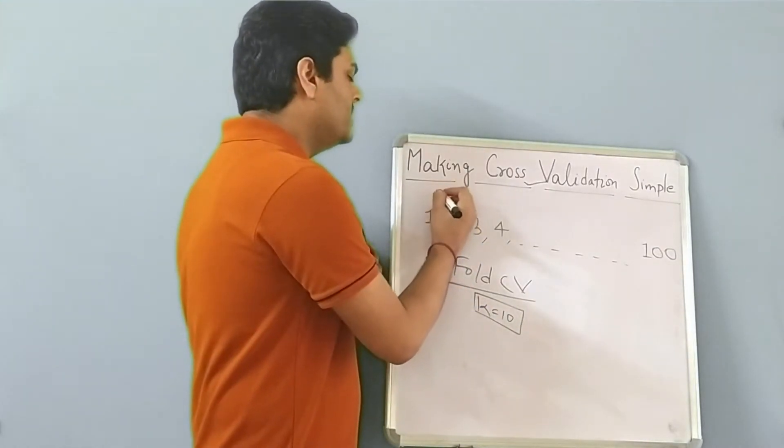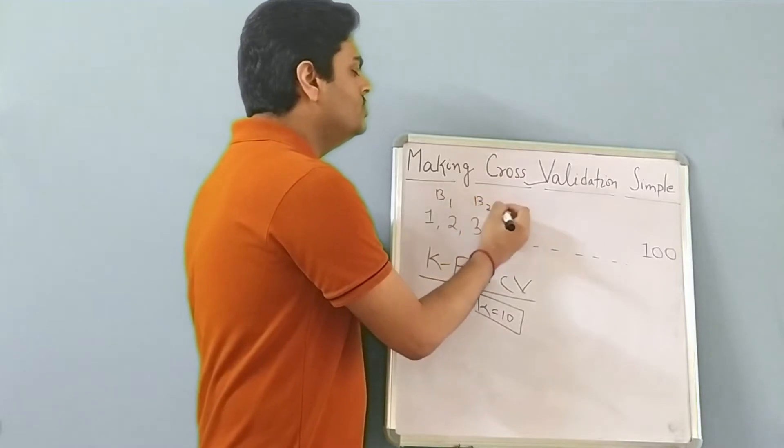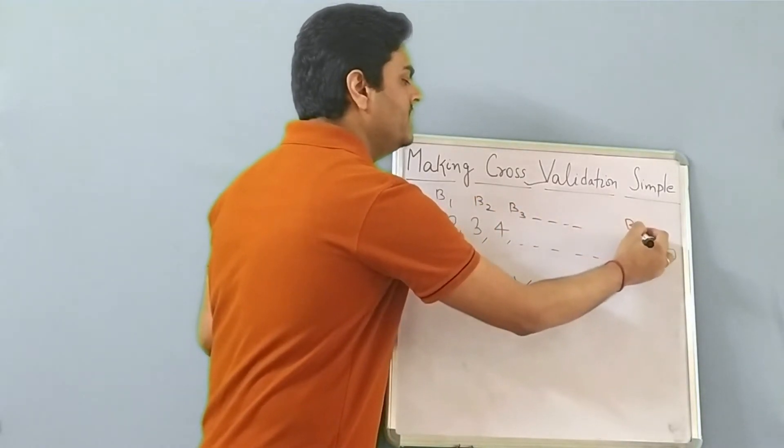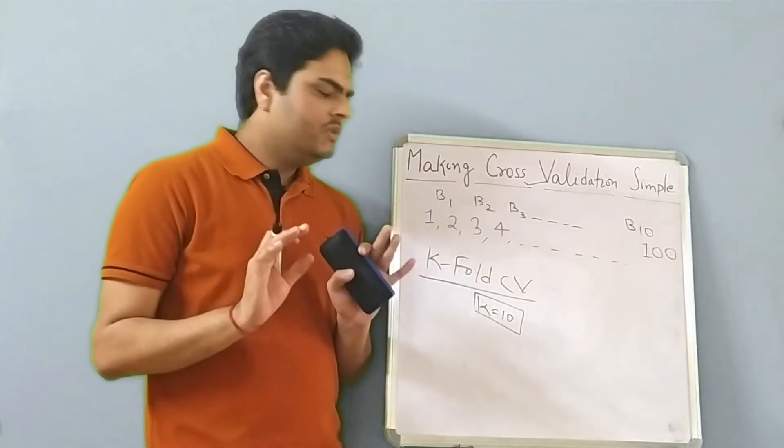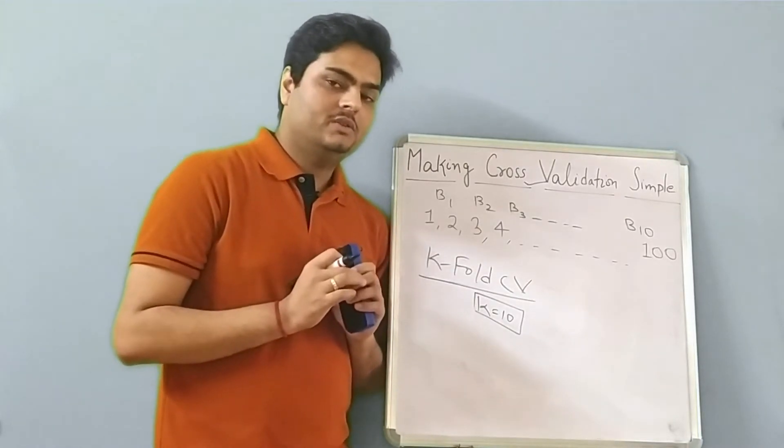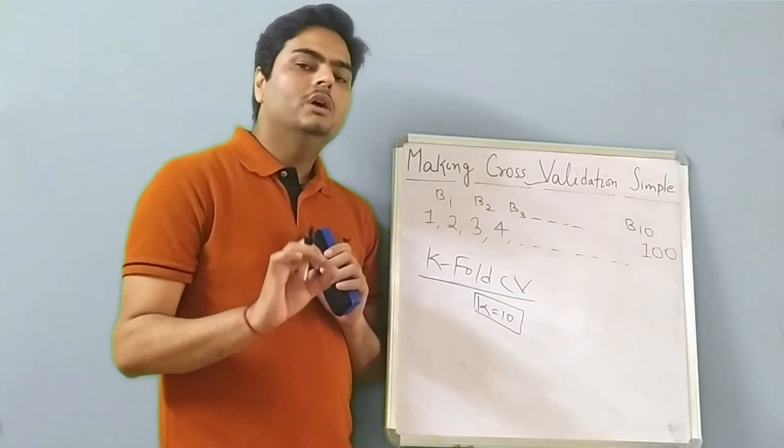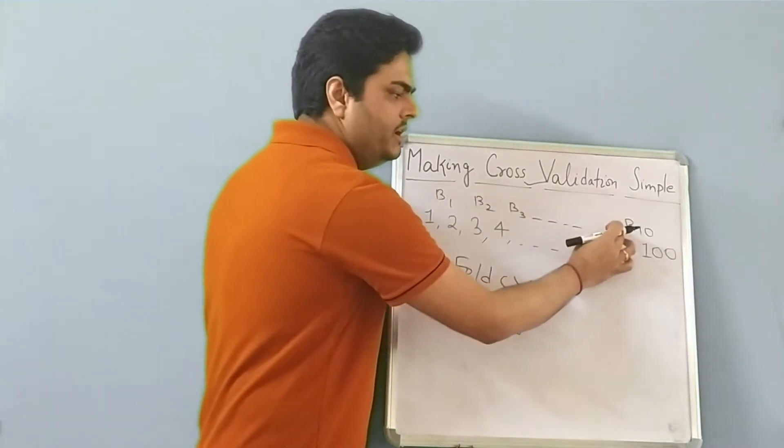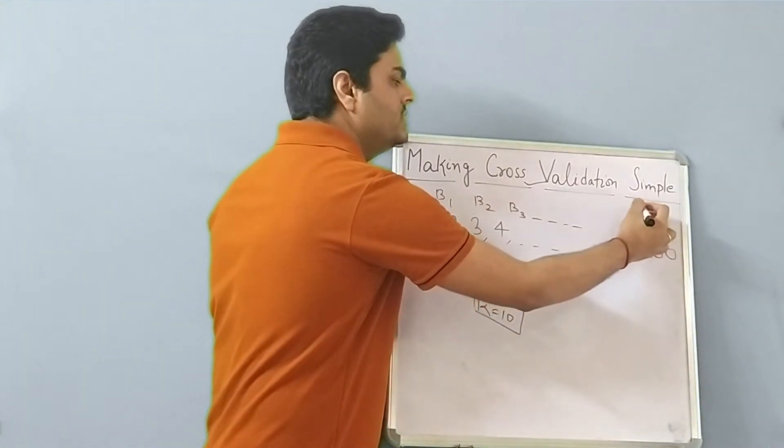Let us call that bucket one, bucket two, bucket three, up to how many buckets will be created? Bucket 10. Now, what will happen in K fold cross validation is there will be 10 iterations. In first iteration, your model will get trained on bucket one to bucket nine and bucket 10 will be used for testing.